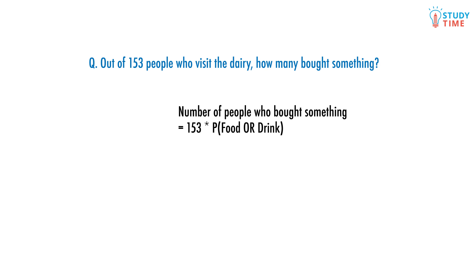Now we might want to consider what we can do with this new information. What if I wanted to ask you, out of 153 people who visit the dairy, how many bought something? All we do is multiply this total by our probability. So the number of people who bought something equals 153 times the probability of buying food or drink equals 153 times the probability of food plus the probability of drink equals 153 times 0.6 equals 91.8. But we aren't quite done.